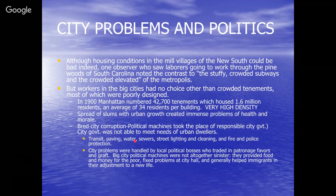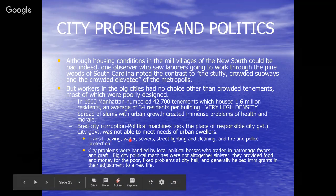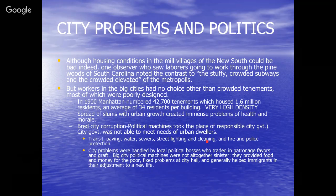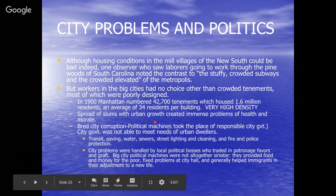Political machines — these political organizations — took the place of responsible city government and provided services that city government was incapable of delivering: transit, street paving, water, sewage, street lighting, street cleaning, fire and police protection. City problems were handled by local political bosses who traded patronage, favors, and graft for these services. The big city political machines weren't entirely sinister — they did provide food and money for the poor, help fix problems at city hall, and generally helped immigrants adjust to their new life.